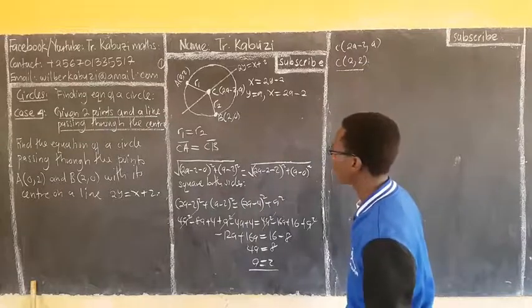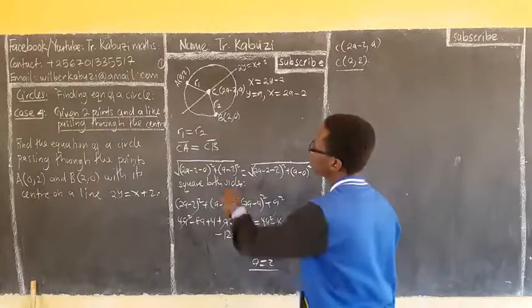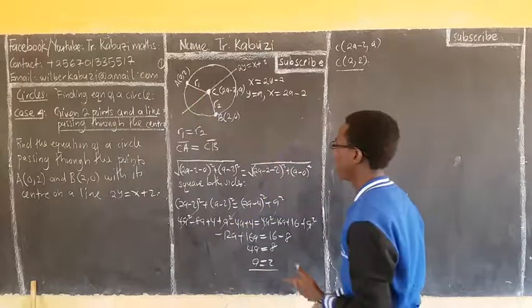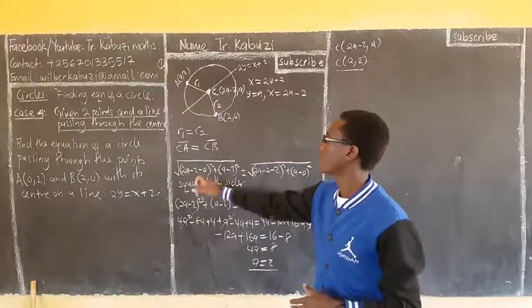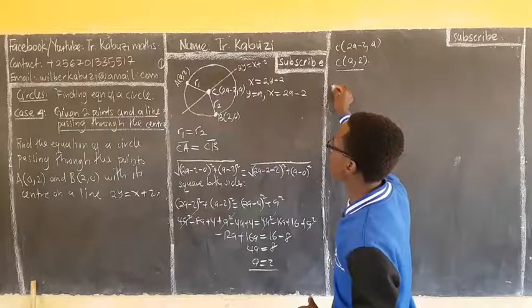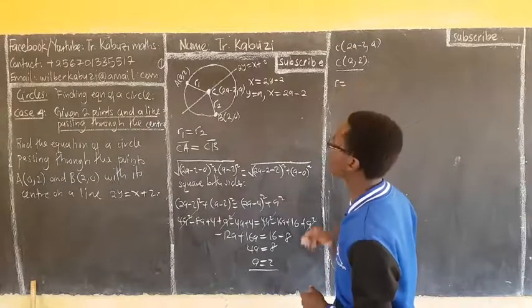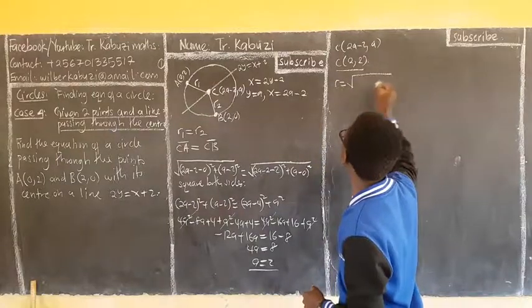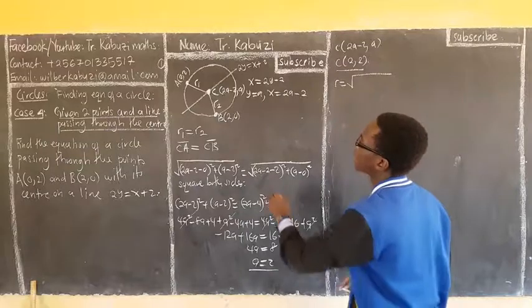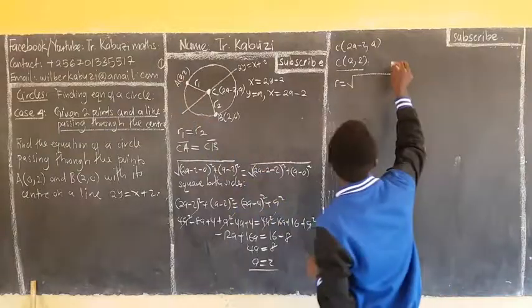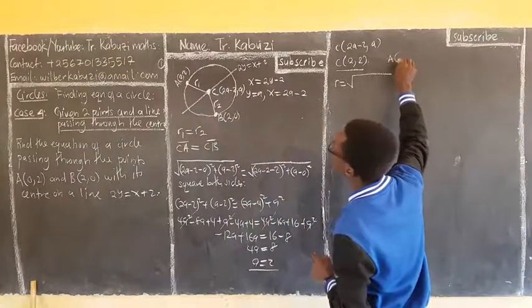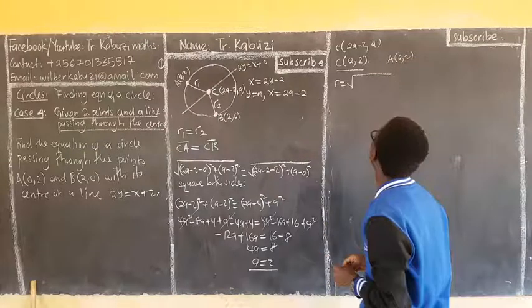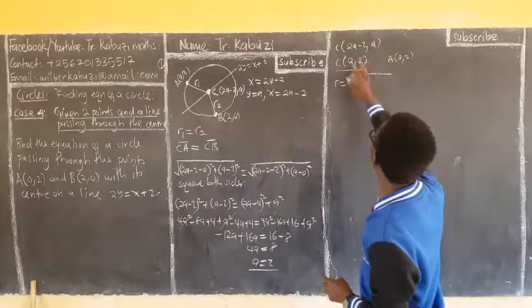I can easily get my radius. My radius from here, r2. And I use this one, or this one. But this one, I think it's better. So, my radius is going to be, square root of, now the center. The distance between the center and the point A, which is 0,2.